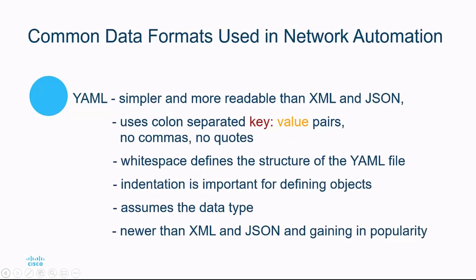YAML is simpler and more readable than both XML and JSON. It uses colon-separated key-value pairs, where no quotes or commas are necessary. Whitespace defines the structure of a YAML file, in comparison to XML and JSON, and indentation is important for defining the objects. YAML will try to assume the data type. YAML is newer than XML and JSON and gaining in popularity, especially with network programmability.